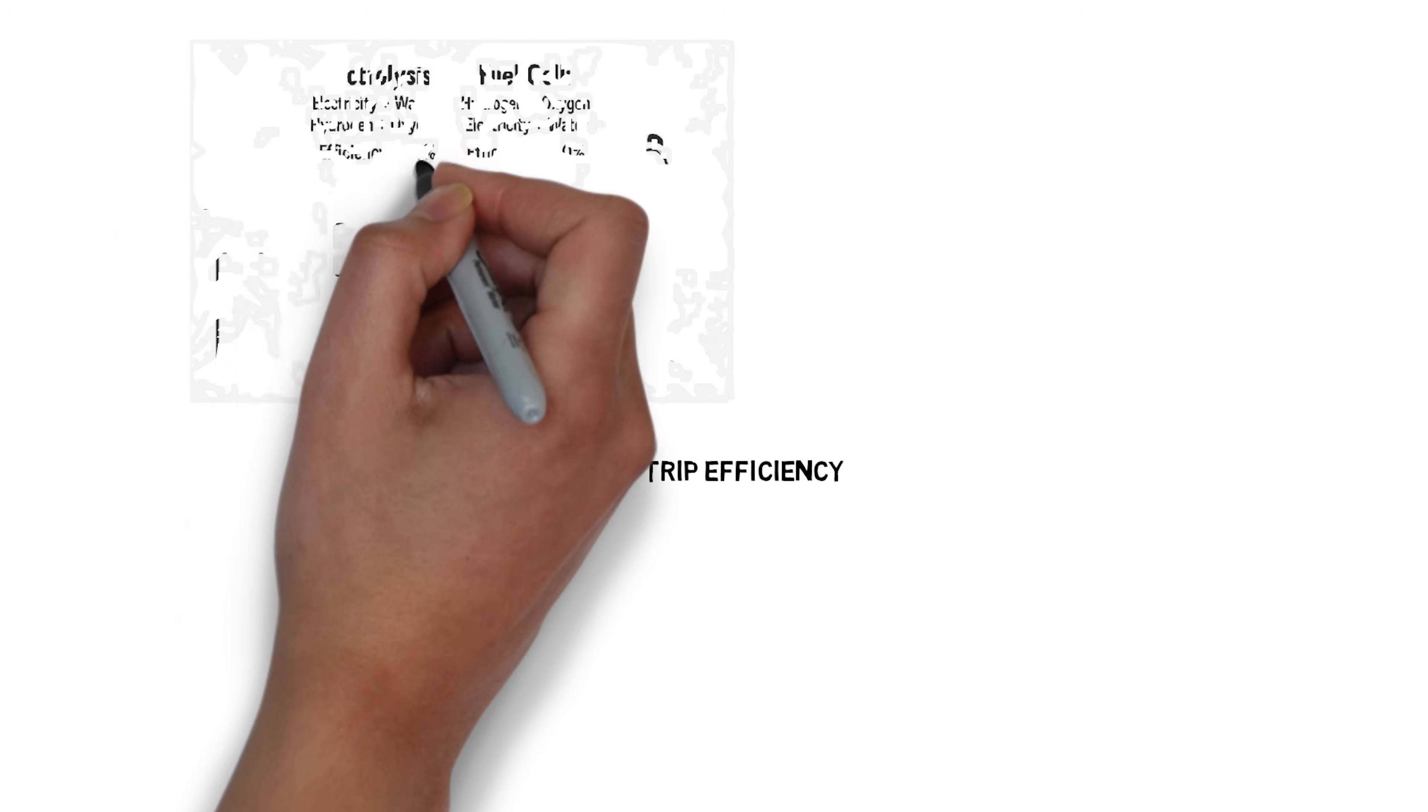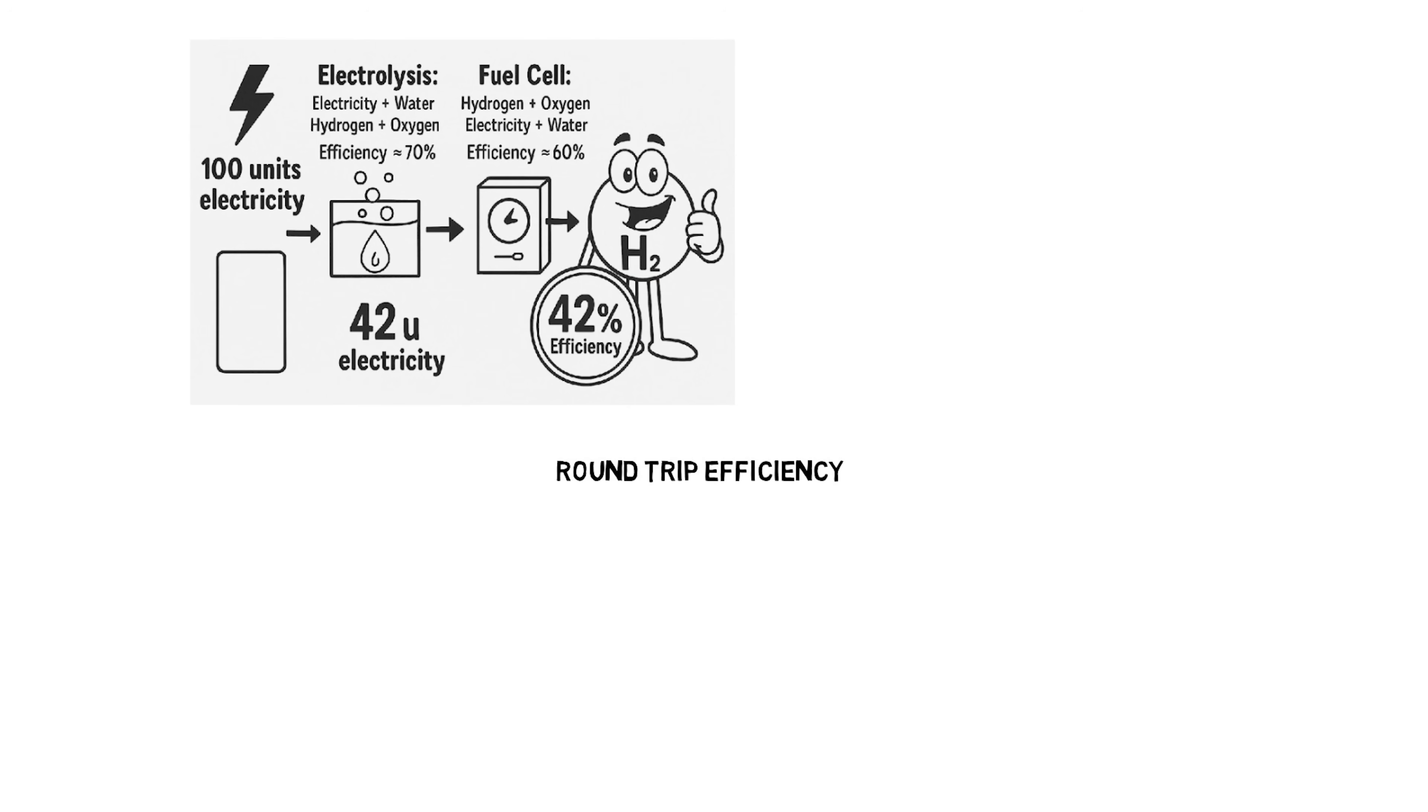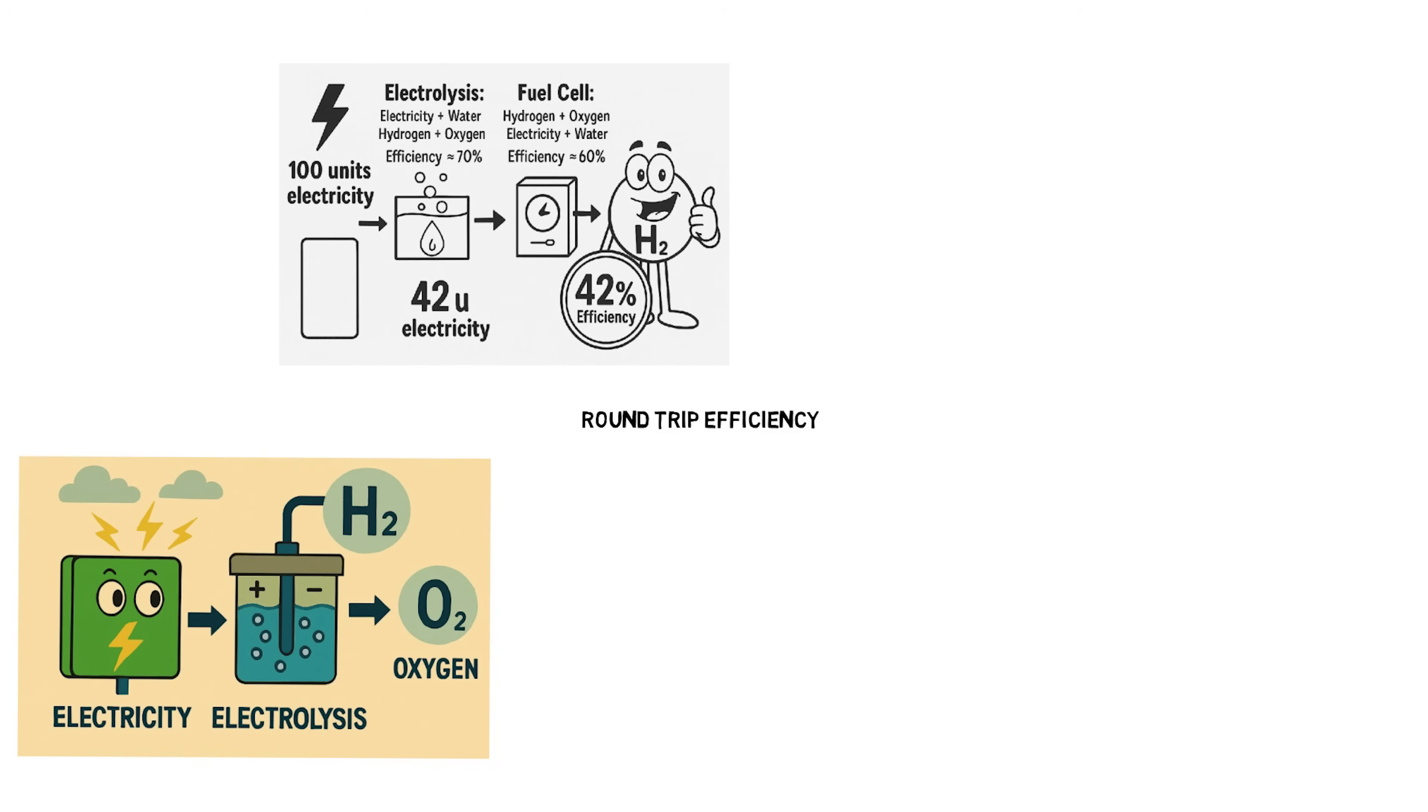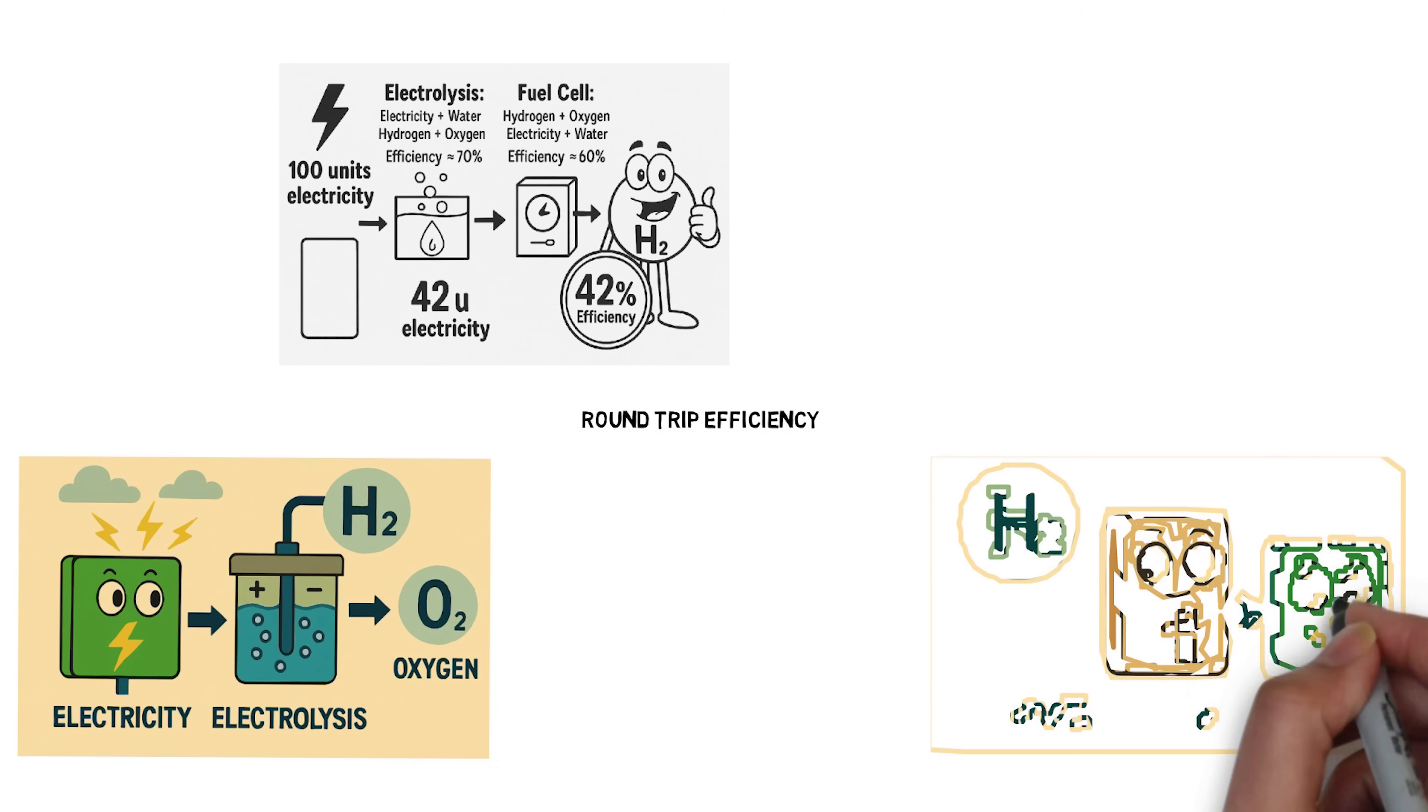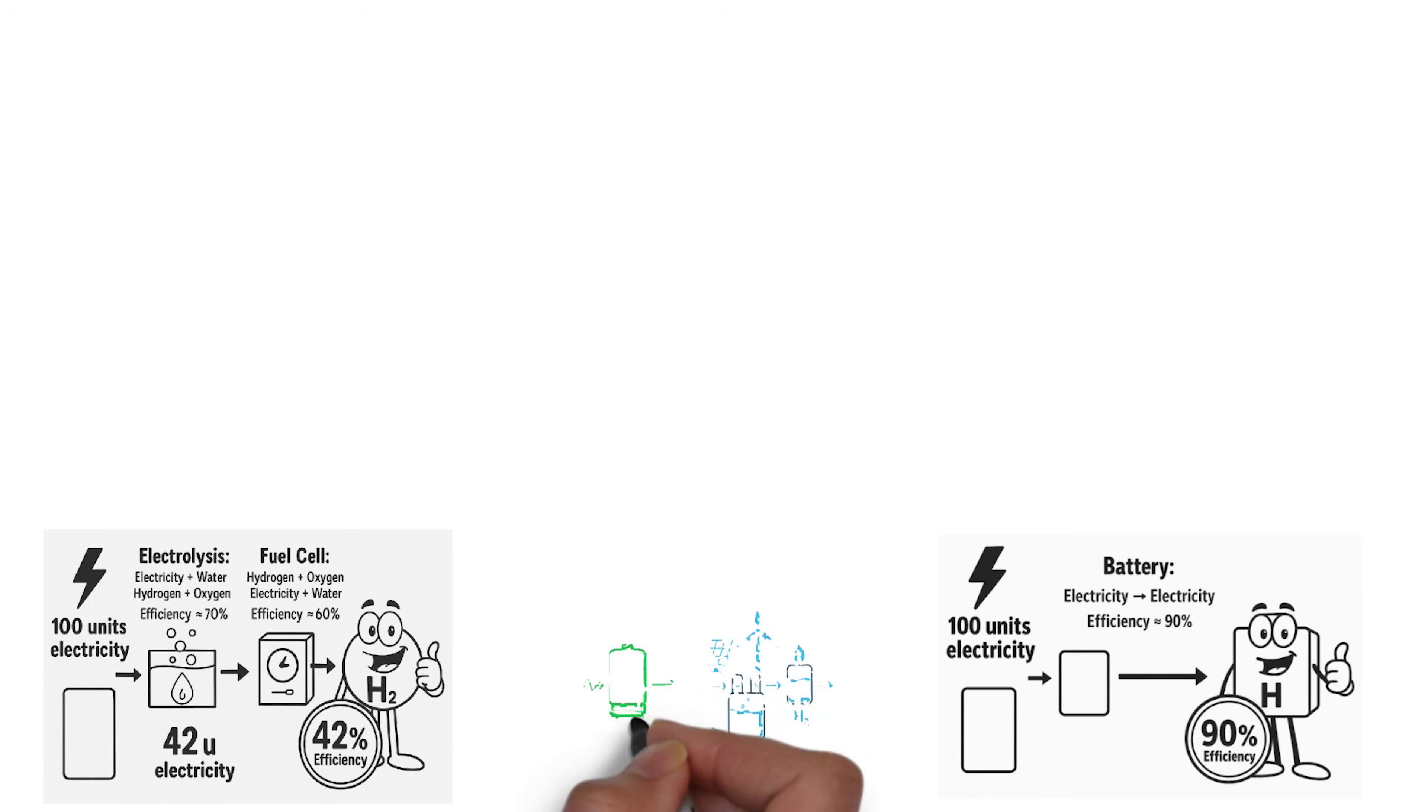Let's imagine we start with 100 units of electricity. What happens next depends on the path we choose. With hydrogen, the journey is a bit longer. First, the electricity is used to split water through electrolysis. Then, that hydrogen is converted back into electricity with a fuel cell. In the end, only about 42% of the original energy makes it through. Now, compare that to a battery. Electricity is stored directly, converted through an inverter from AC to DC, and back again when needed. The round-trip efficiency is close to 90%. It's a big difference.